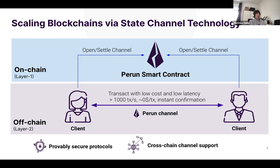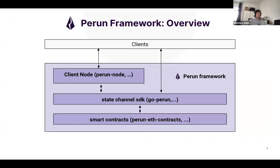Once you've deposited funds and signal with whom you want to interact off-chain, you can transact with basically unlimited throughput — limited only by the number of signatures your computer can generate, which is more than 1,000 transactions per second. There are no on-chain transaction costs and you have instant confirmation. Any state agreed on off-chain can be registered on-chain. Our protocols are provably secure and we can even have cross-chain support — opening channels between different blockchains so clients on different blockchains can exchange funds.